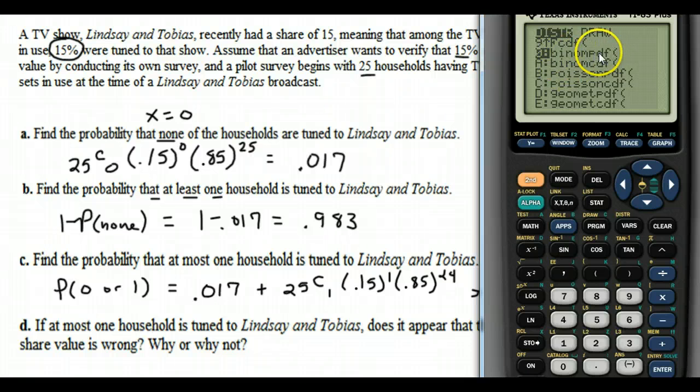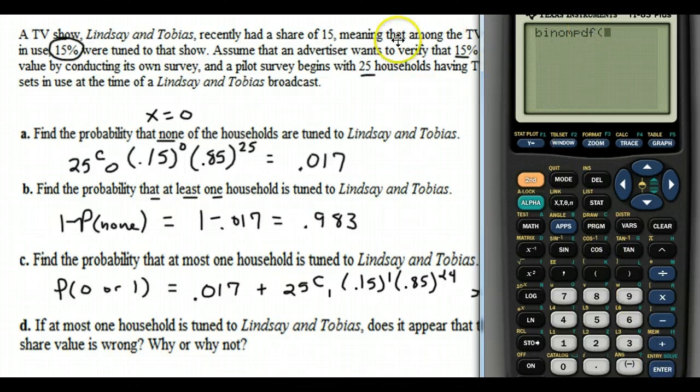So there's the binomial PDF, binomial CDF. The binomial PDF is what we want to use if there's exactly one value that we're looking for, exactly one specific outcome. So if I use a binomial PDF back on this one, what binomial PDF takes in is N, P, X.